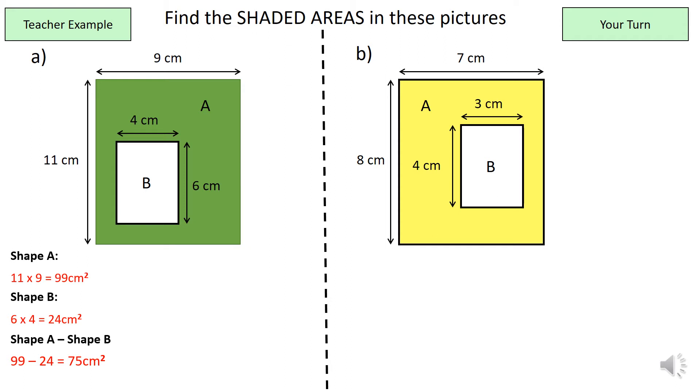Now, I want you guys to, using the exact same method and layout, can you try the yellow box or the yellow shape in your books now? Pause the video now and have a go. Okay, what we should have done is 56 subtract 12 which equals 44 centimeters squared.